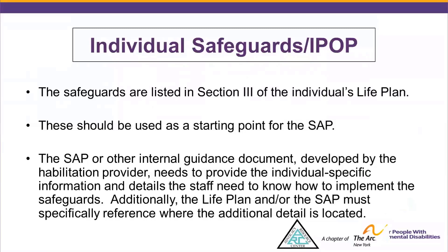The Individual Safeguards are listed in Section 3 of the Individual's Life Plan, and these should be used as a starting point for the Staff Action Plan. The Staff Action Plan or other internal guidance documents developed by the habilitation provider need to provide individual-specific information and detail how staff need to implement the safeguards. Additionally, the Life Plan and the Staff Action Plan must specifically reference where the additional detail is located.